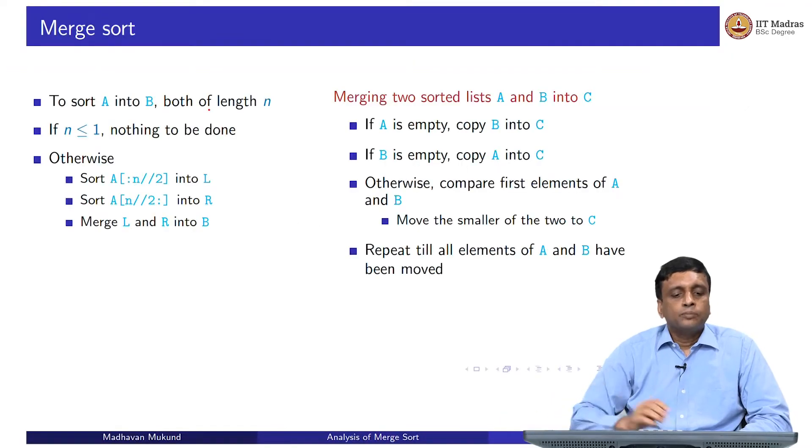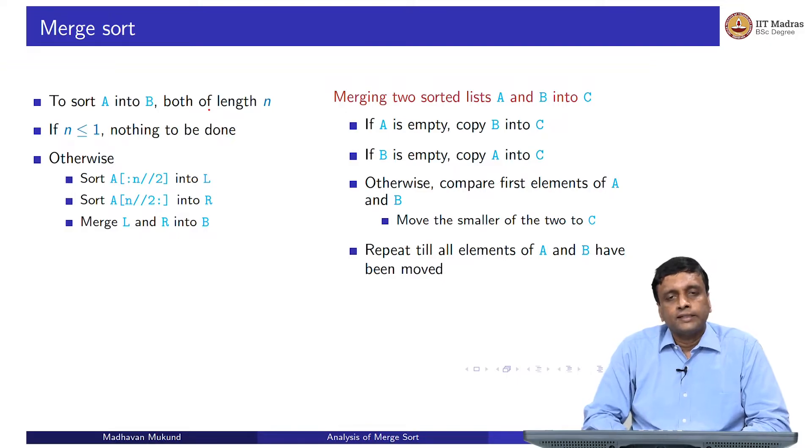Let us analyze merge sort. Merge sort, remember, was this divide and conquer algorithm which divided the list into two halves, sorted the first half, sorted the second half, and then merged the two halves into B. Merging basically looked at the first element in each list and moved the smaller one, and if any of the lists became empty, we just copy the other list. This is just a summary of the basic high level thing of merge sort.